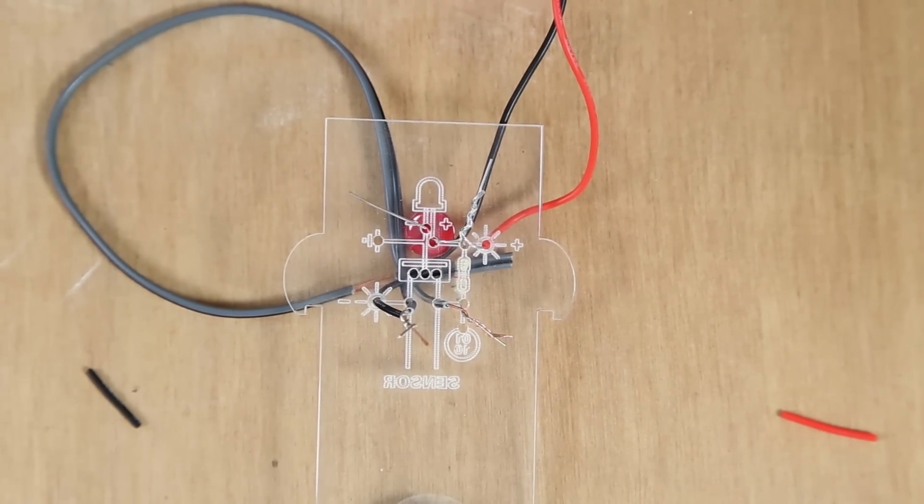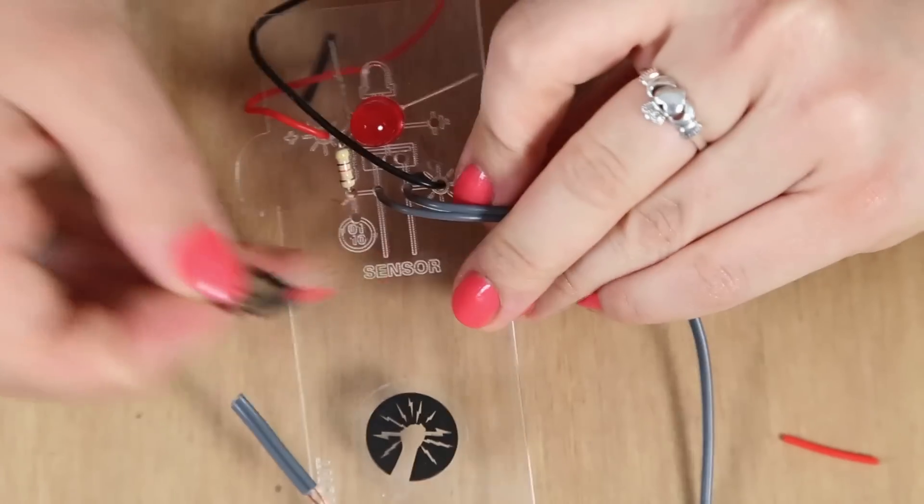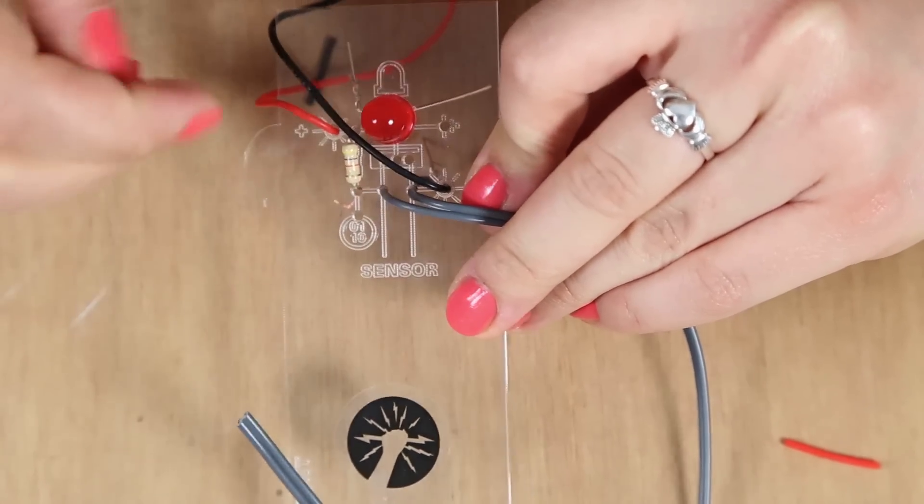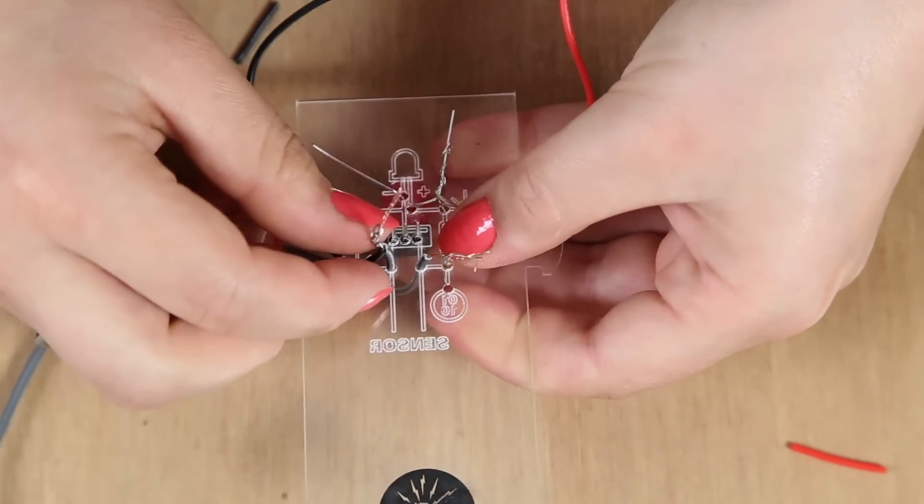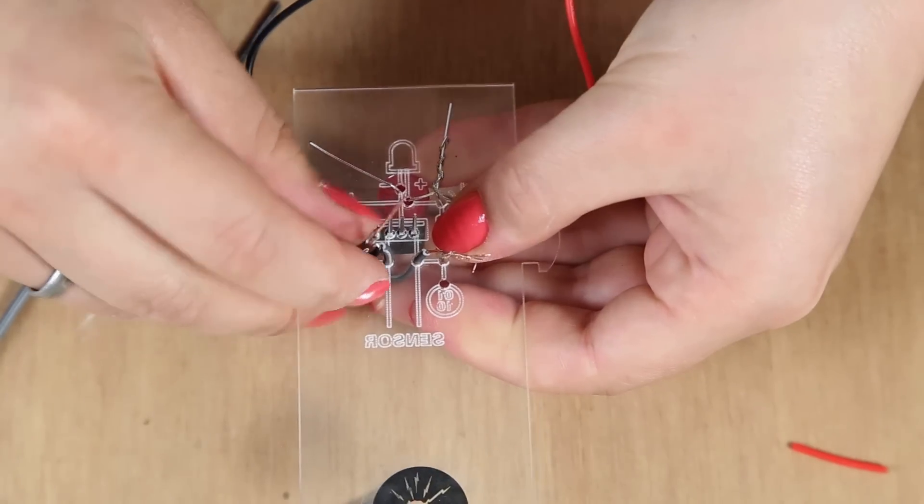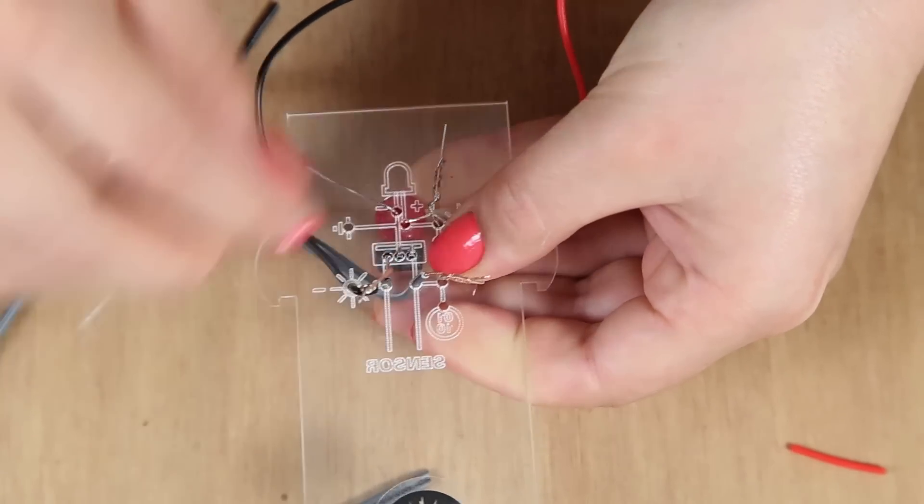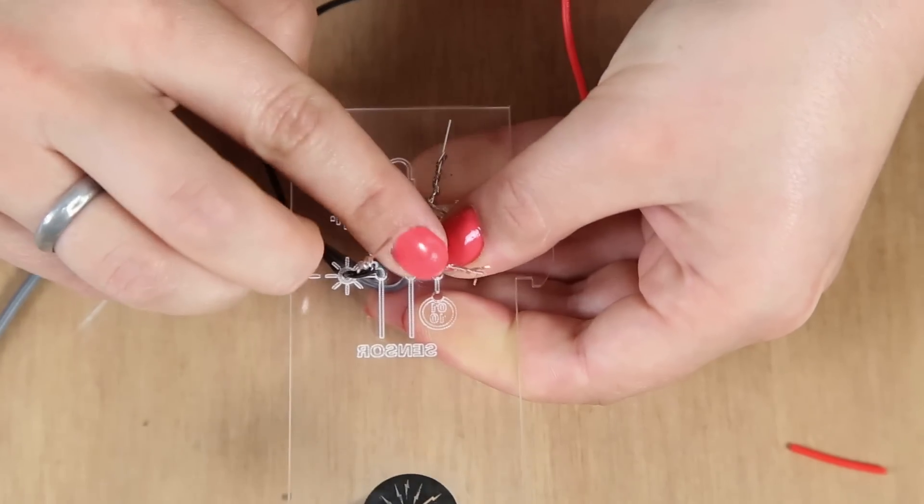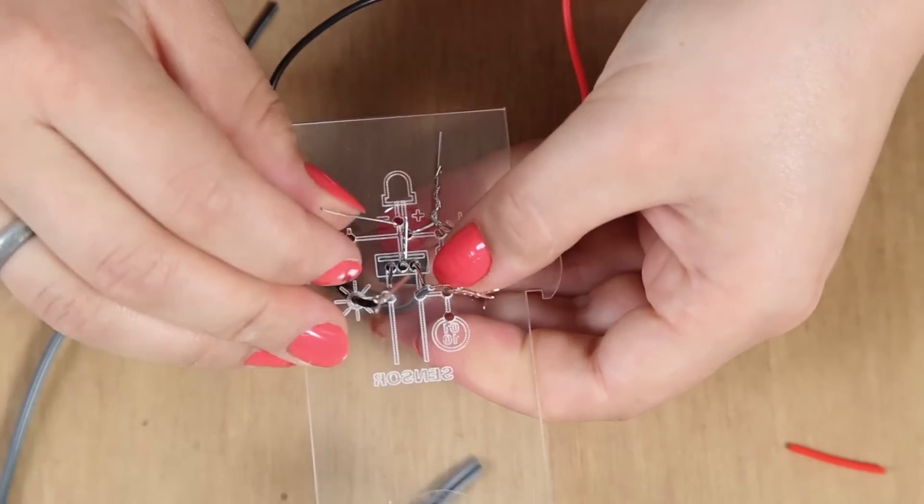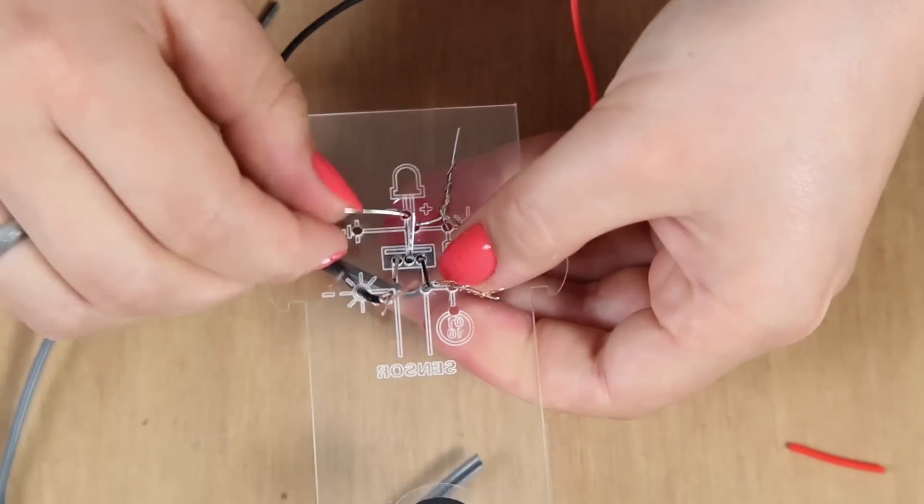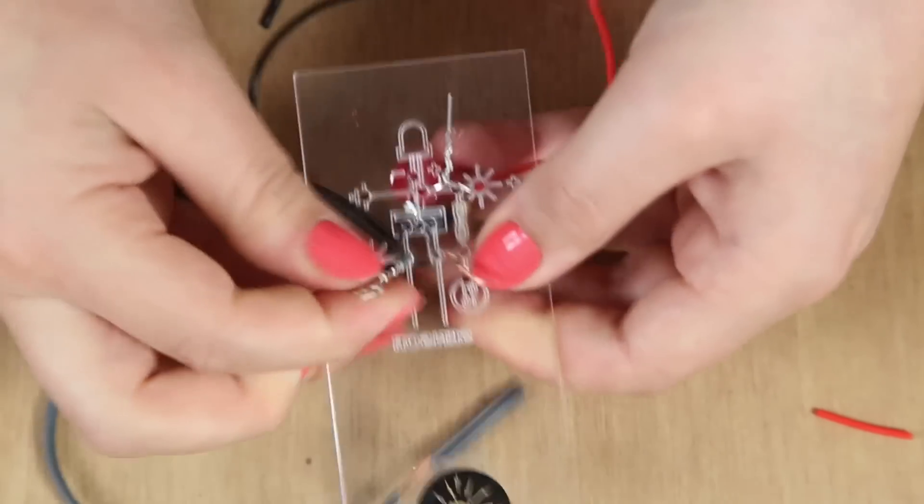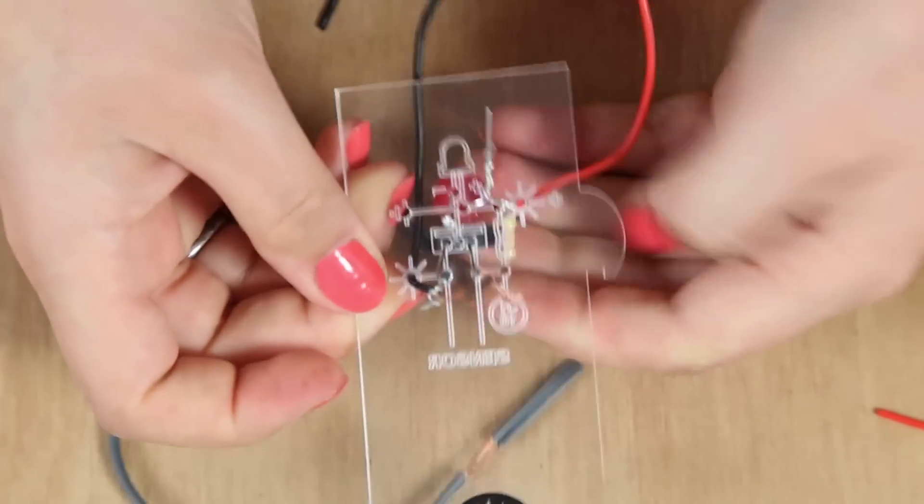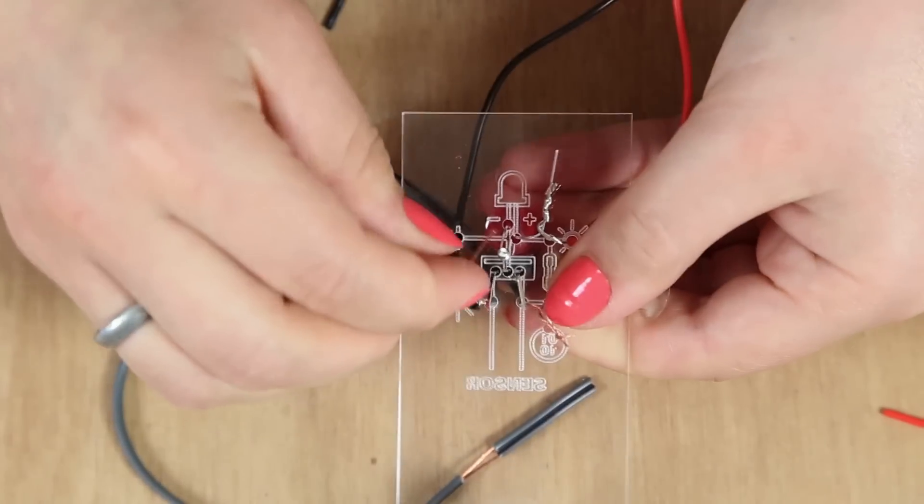And the last component is the MOSFET. We want to make sure that the metal is going against the LED. And we want to bend the left leg down, the middle leg up, and the right leg down. So that's because we want to attach the negative leg of the LED to the middle leg. And then you want to attach the sensor and the negative of the solar panel to the left leg of the MOSFET.